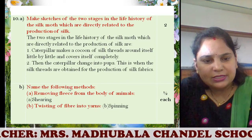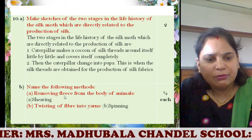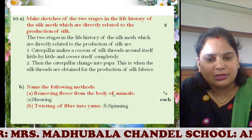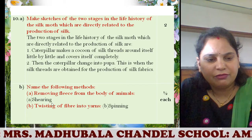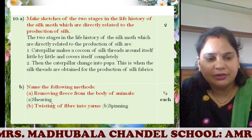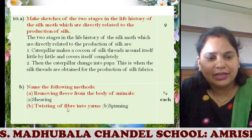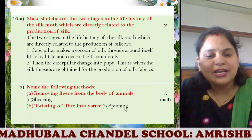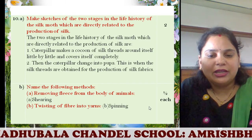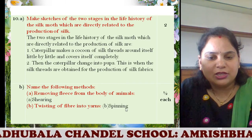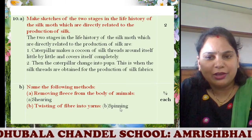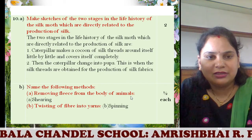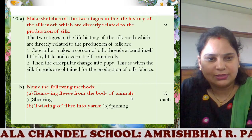Next: name the following method for removing the fleece from the body of animals. If you write shearing, that is half a mark, and twisting of fibres into yarns — spinning — that is half a mark. So here you get two plus half and half is one, that is three marks total.